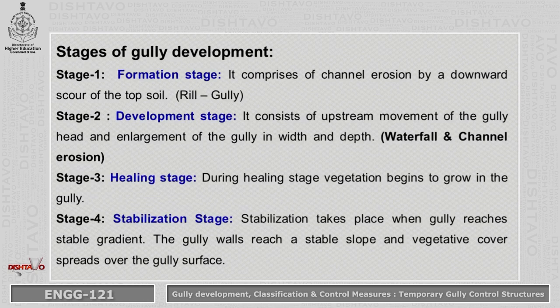There are different stages of gully development. There are four stages: formation stage, development stage, healing stage, and stabilization stage. Formation stage comprises channel erosion by downward scour of the topsoil — meaning from rill to gully. The development stage consists of upstream movement of the gully head and enlargement of the gully in width and depth. Two types of erosion occur: waterfall erosion and channel erosion.